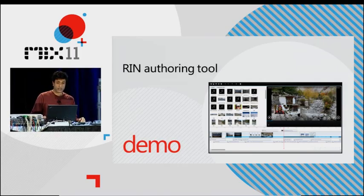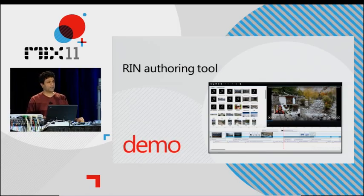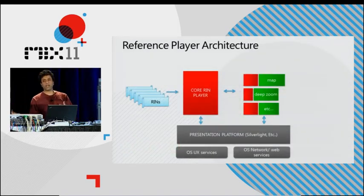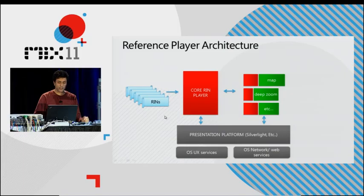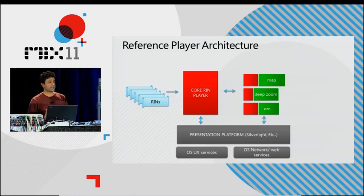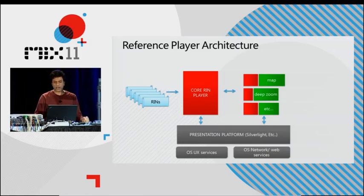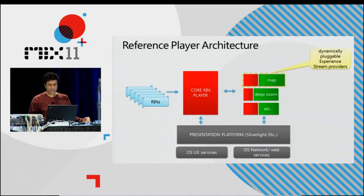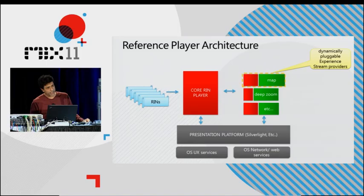What this application generates is not code but rather an instance of the data model I've been talking about — data representing the framework I was describing. So I'm going to switch over next to talking about what happens to that data. What is the player? How does the player take this data and what does it do with it? You can take a look at the narratives hosted on digitalnarratives.net and play around for yourself. The output is an instance of a Rich Interactive Narrative, and I'm now going to talk about what happens in the player — a typical reference architecture.